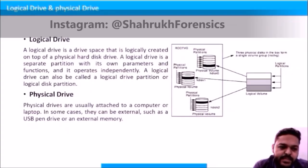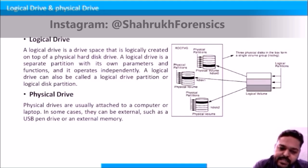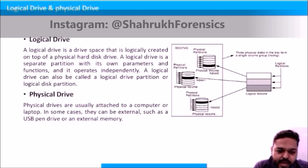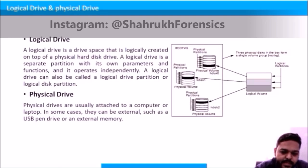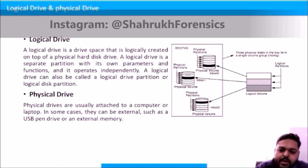Next is logical drive and physical drive. A logical drive is a drive space partition that is logically created on top of a physical hard disk drive. It is a separate partition with its own parameters and its own function, and it operates independently. It can also be called a logical disk partition. For example, if there is a 1 TB hard disk and you create 3 partitions — C drive with 500 GB and D drive with 200 GB — each of those is called a logical partition.